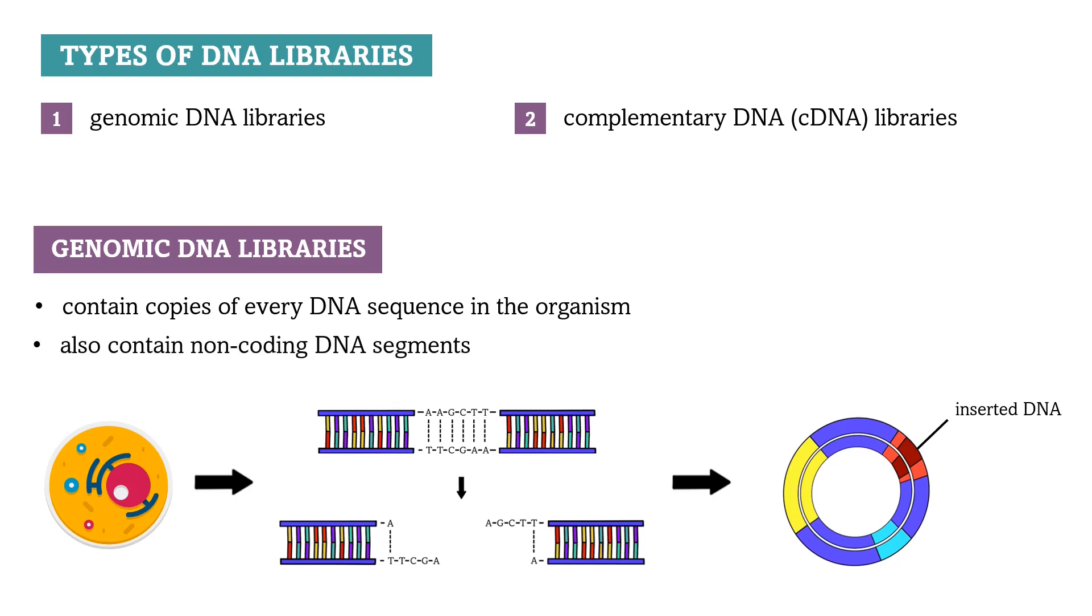What's also important is that you must choose your cloning vectors based on the length of DNA you want to insert. For example for the human genome, artificial chromosomes were used because they can carry large DNA fragments.